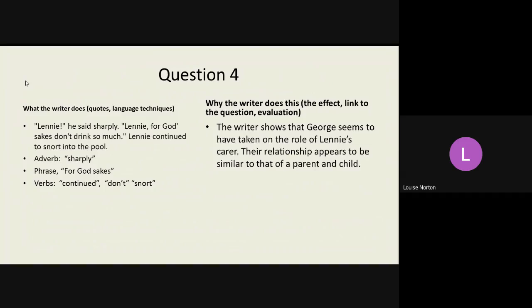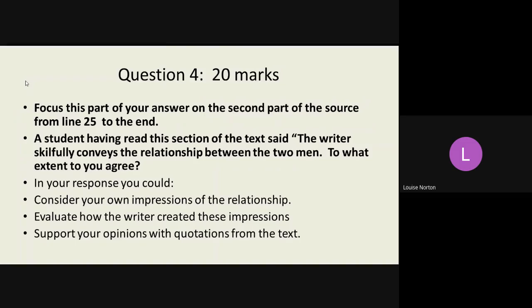So, once we've identified a quotation, we then need to think about why does the writer do this? So, we need to think about the effect on the reader. We need to think about how we might link this to the question and we also need to think about how you might evaluate this. So, we might say something like, the writer shows that George seems to have taken on the role of Lenny's carer and their relationship seems, appears to be similar to that of a parent and child. So, here we're thinking about the question. We're thinking about the relationship between the two men.